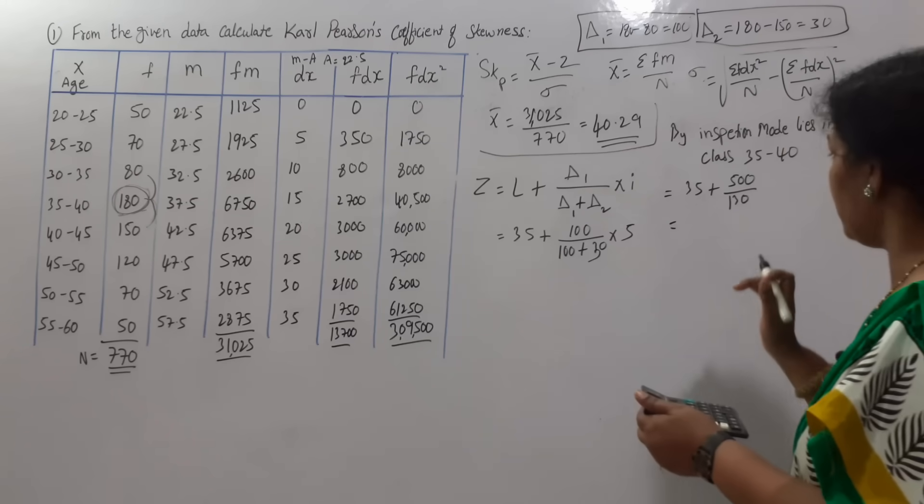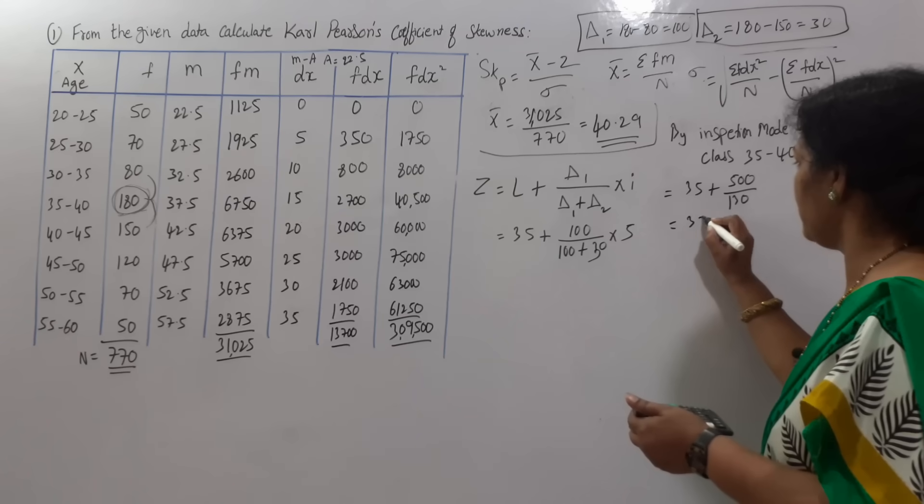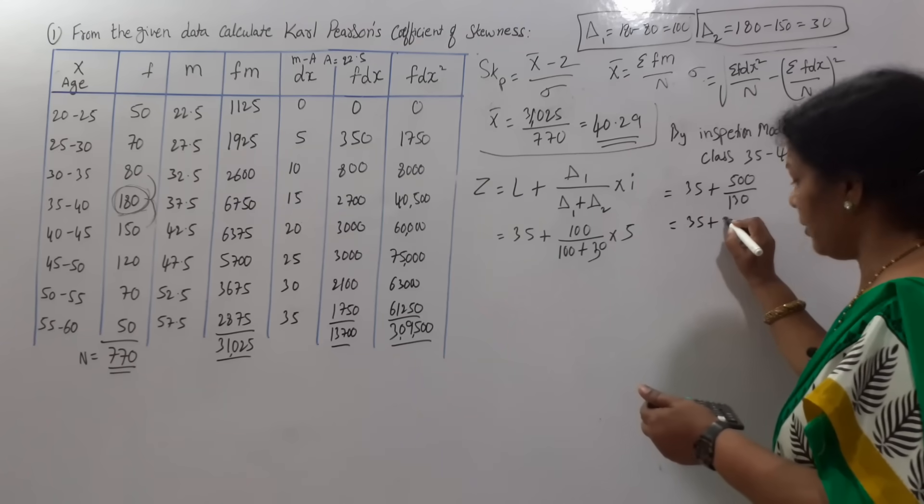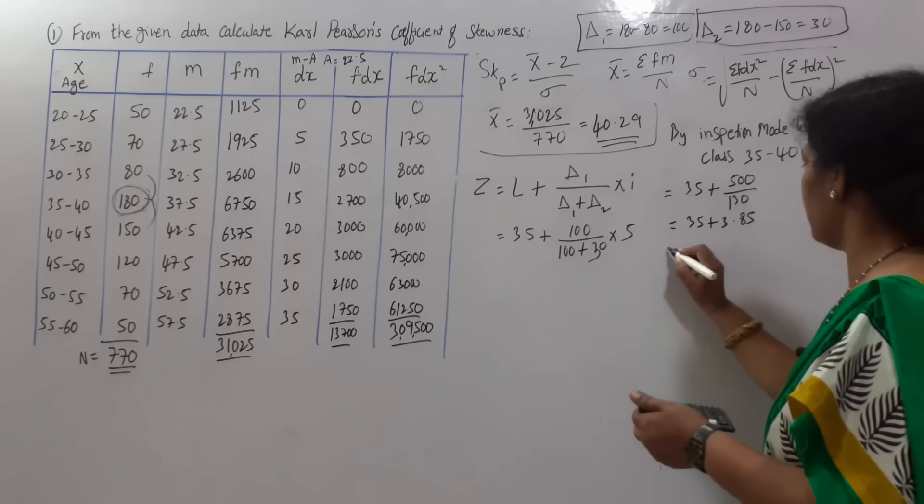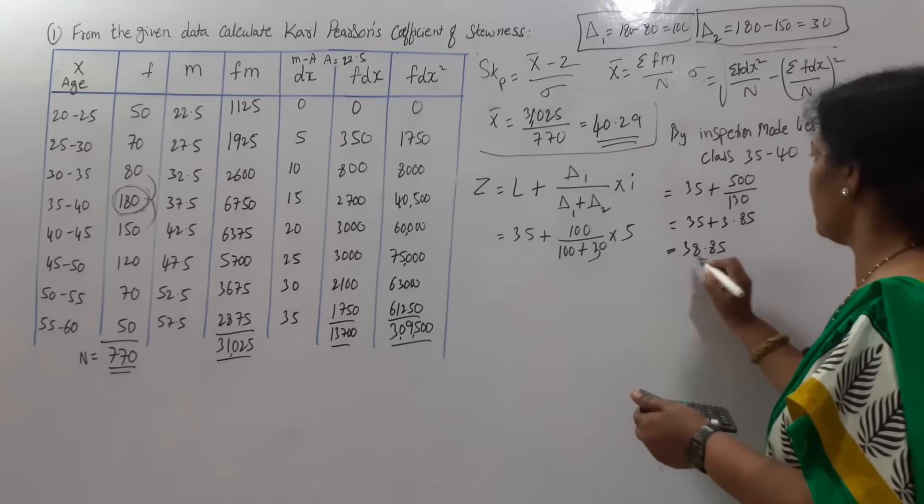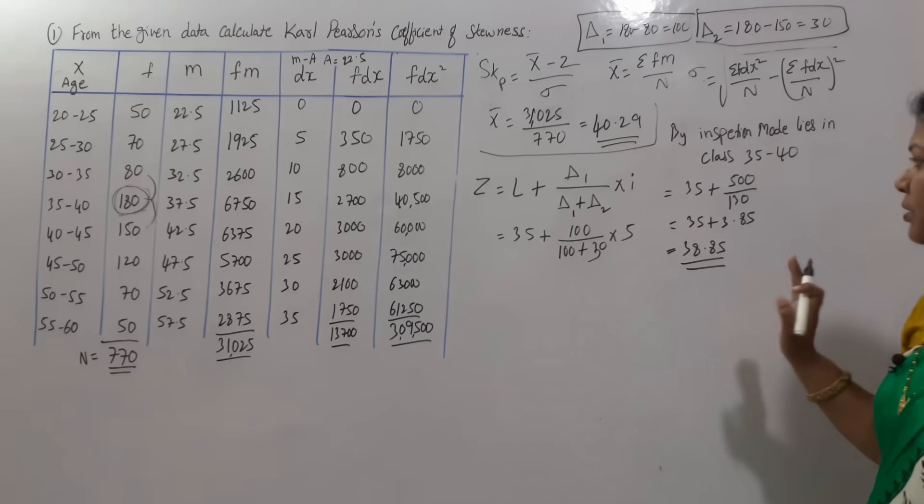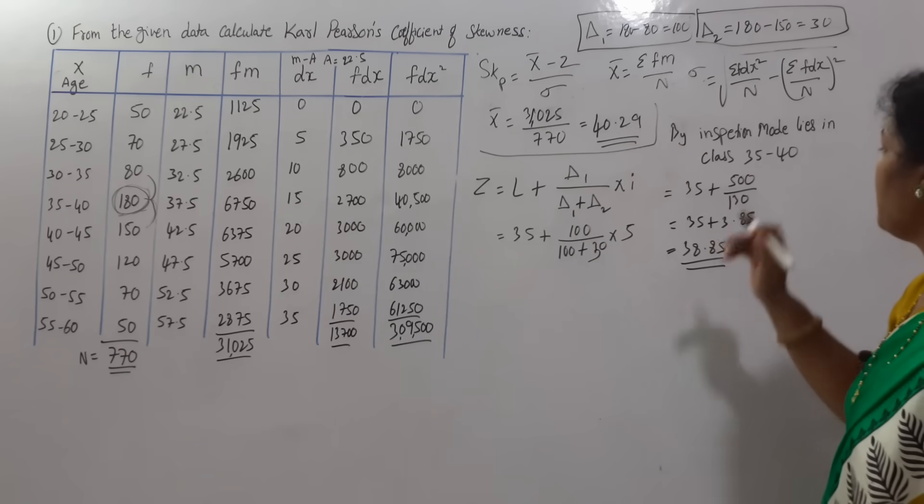500 divided by 130 comes to 3.85. Means 35 plus 3.85 comes to 38.85. So this is mode. X bar we got, mode we got. Next, what else we need? Standard deviation.